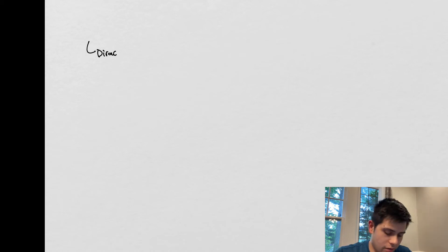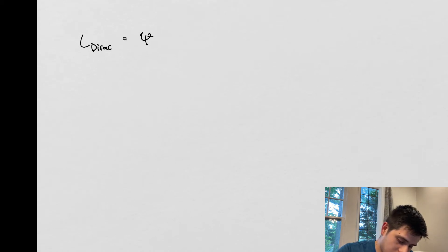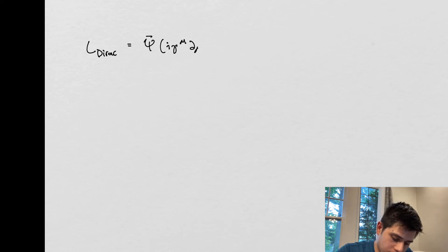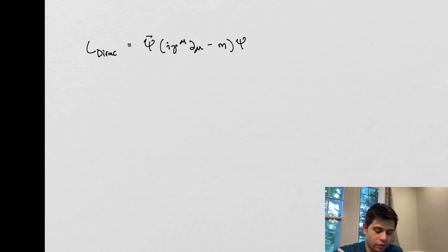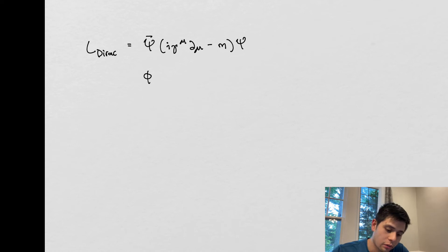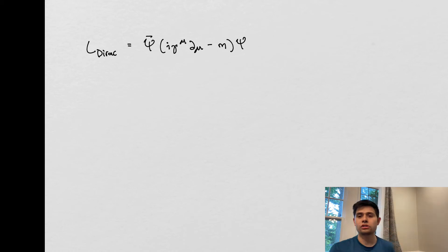So the Dirac Lagrangian looks like this. I'm just going to cut to the chase and write it down. It starts with minus m. It's important to know that we're not using the scalar field symbol — that symbol is associated with scalar fields, as we've been discussing with the Klein-Gordon Lagrangian. Instead, we're using these symbols here, which correspond to a spinor field. The Dirac Lagrangian tells us about the dynamics of spinors.